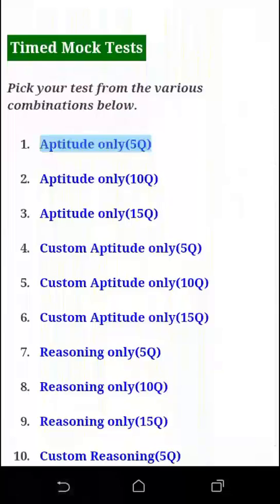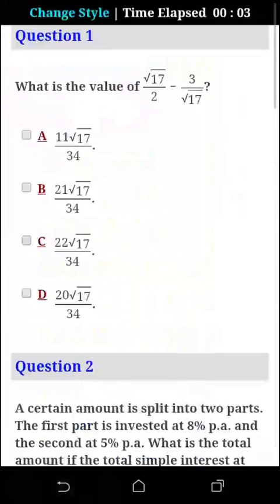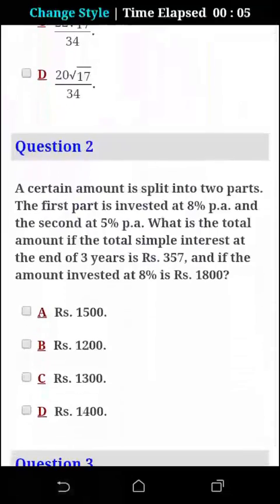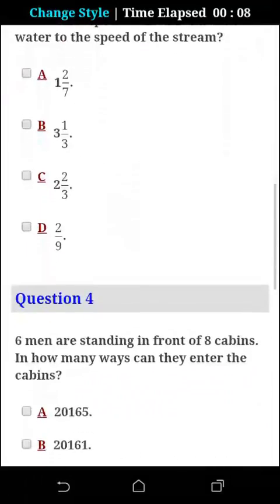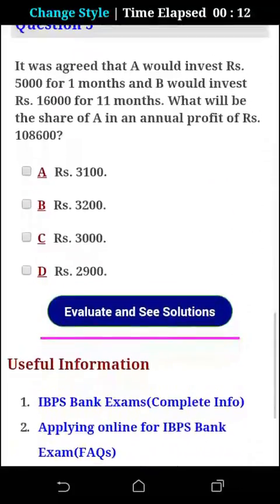Aptitude only 5 questions, 10 questions, 15 questions, aptitude only 5 questions. So you can see the square root sign and all mathematical symbols appear properly. Questions are very well formatted. All the 5 questions are visible.